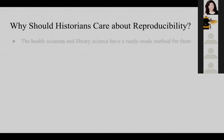Why should historians care about reproducibility? The health sciences and the library sciences have a ready-made method for them. There are many things we can borrow from systematic review and how we can import those practices — centered on protocols, transparency, and reproducibility — and apply them to the search for primary archival sources.